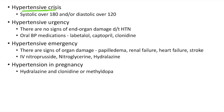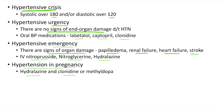Hypertensive crisis is defined as systolic BP over 180 or diastolic over 120 mmHg. Hypertensive urgency has no signs of end-organ damage and can be treated with oral BP medications like labetalol, captopril and clonidine. Hypertensive emergency has signs of end-organ damage like papilledema, renal failure, heart failure and stroke, treated with IV nitroprusside, nitroglycerin and hydralazine. Hypertension in pregnancy can be treated with hydralazine, clonidine or methyldopa.